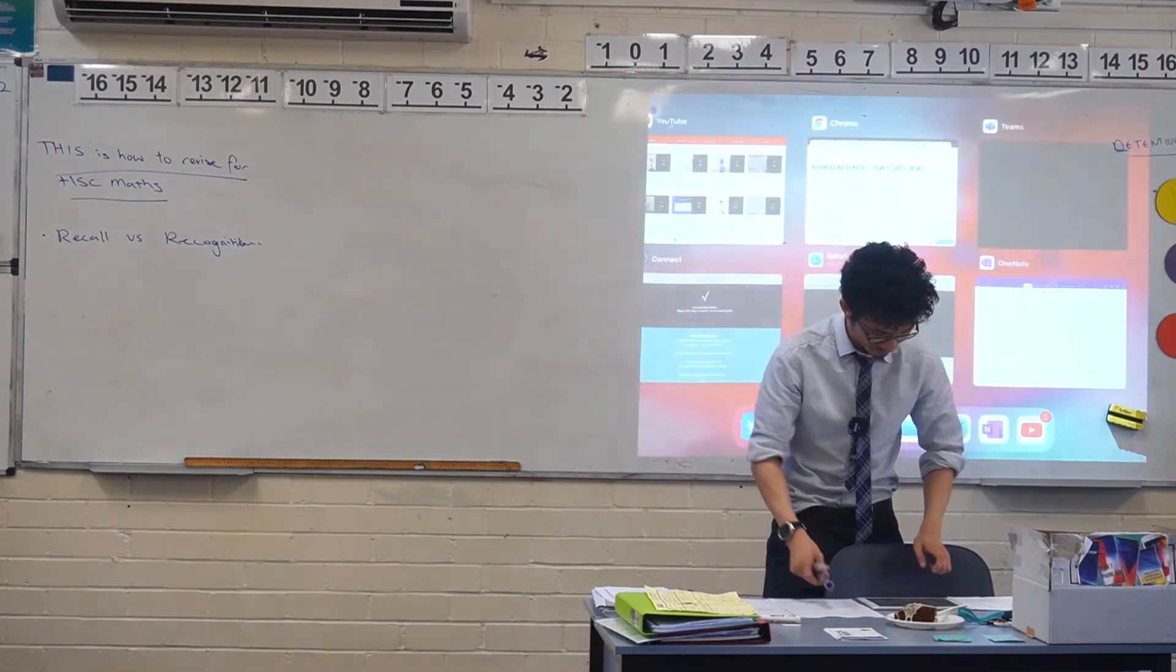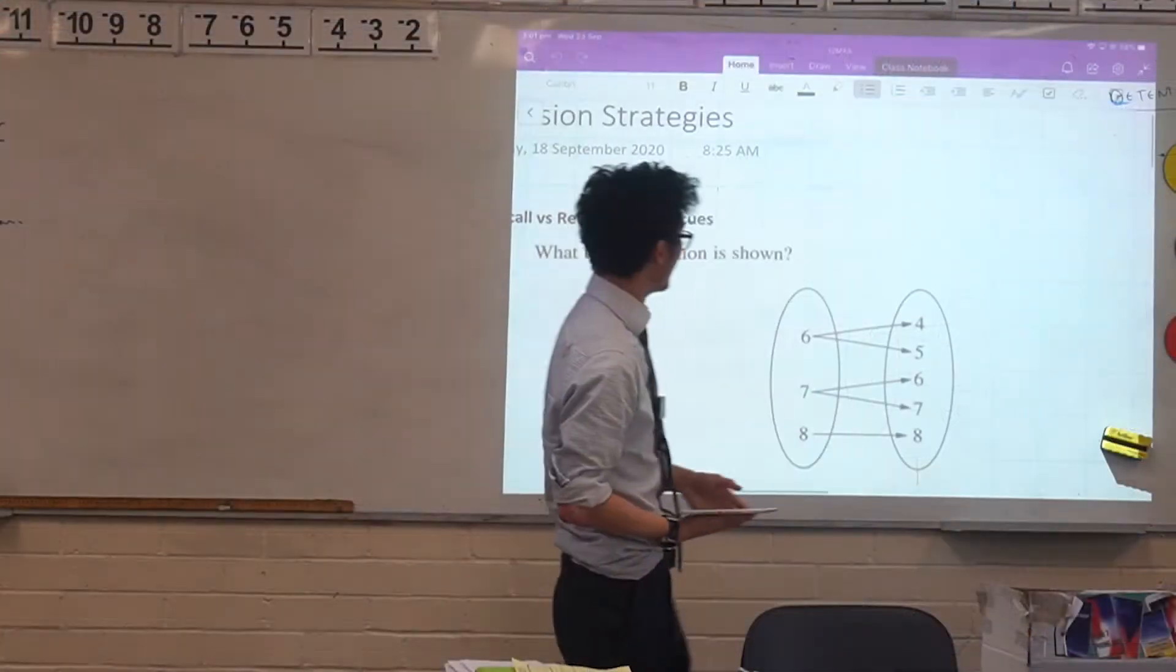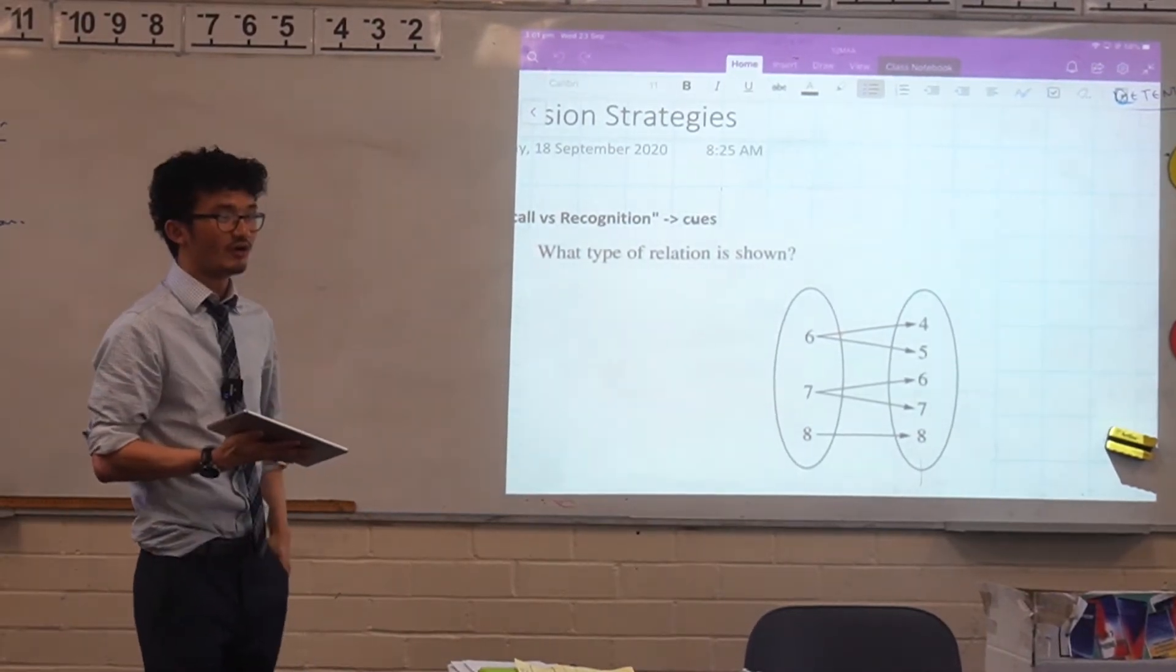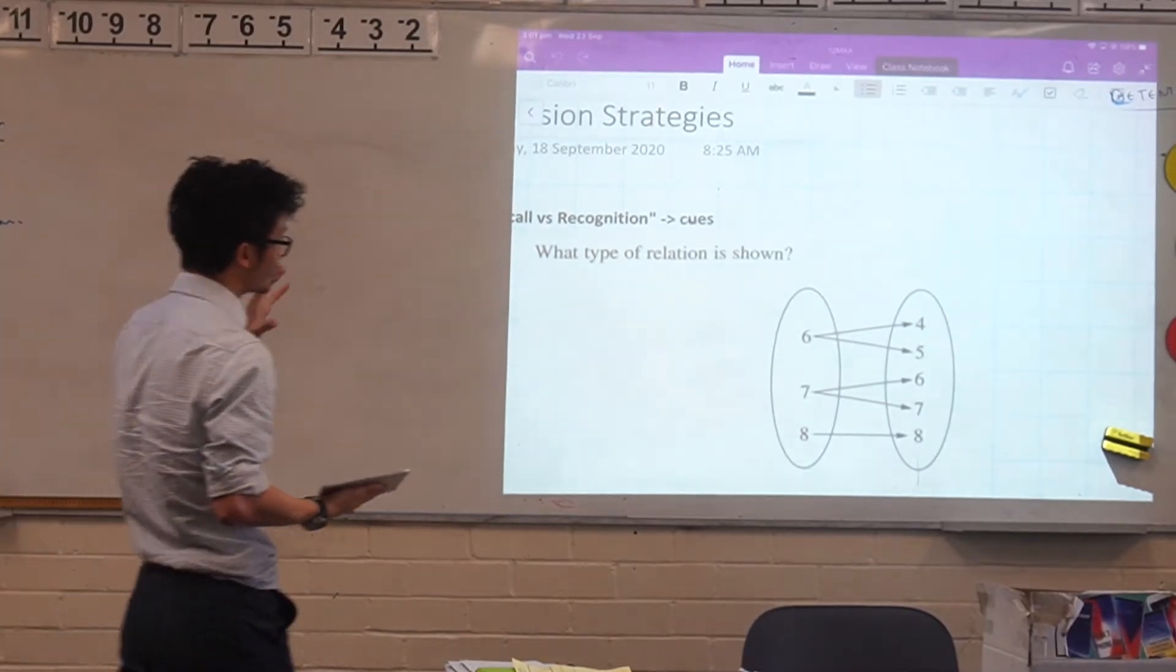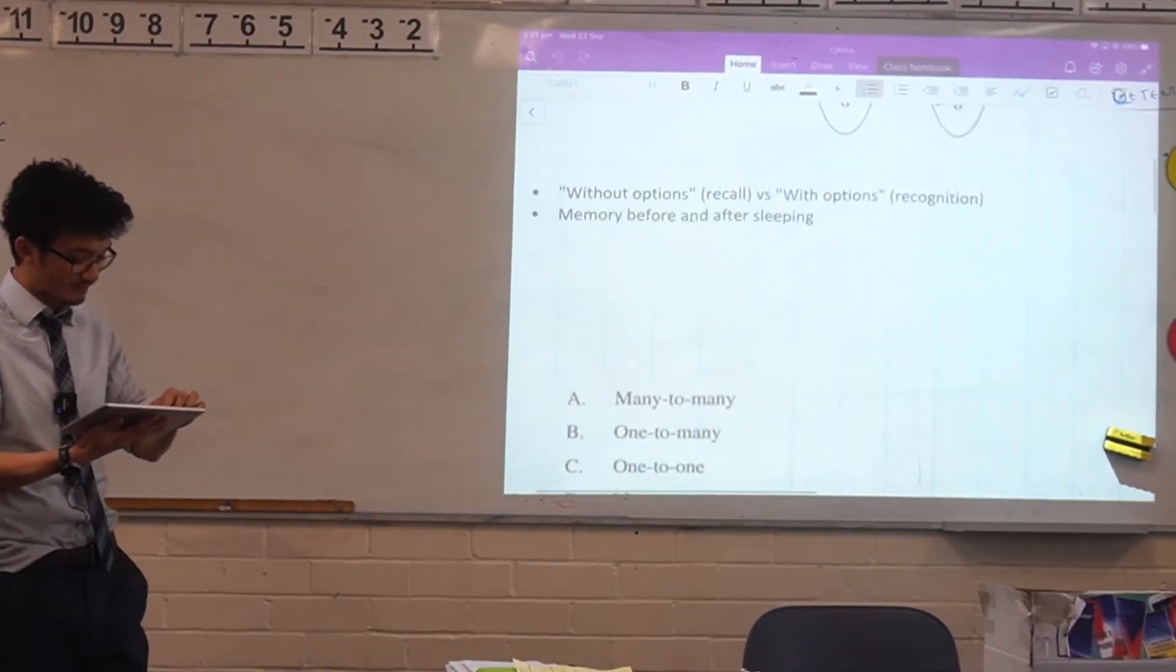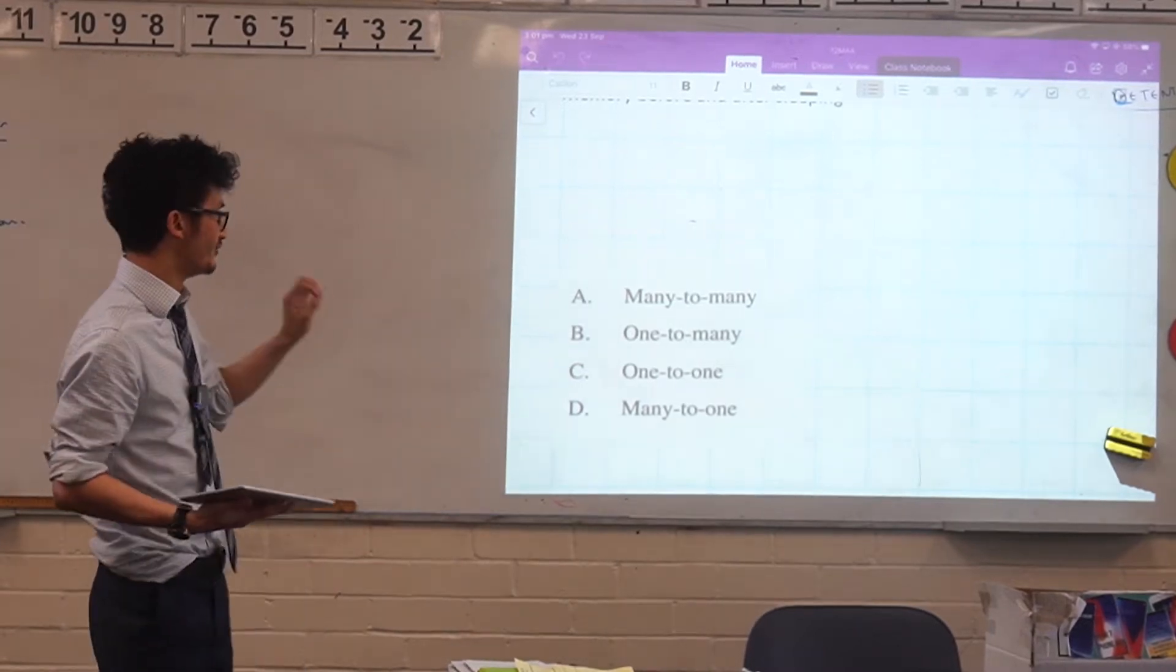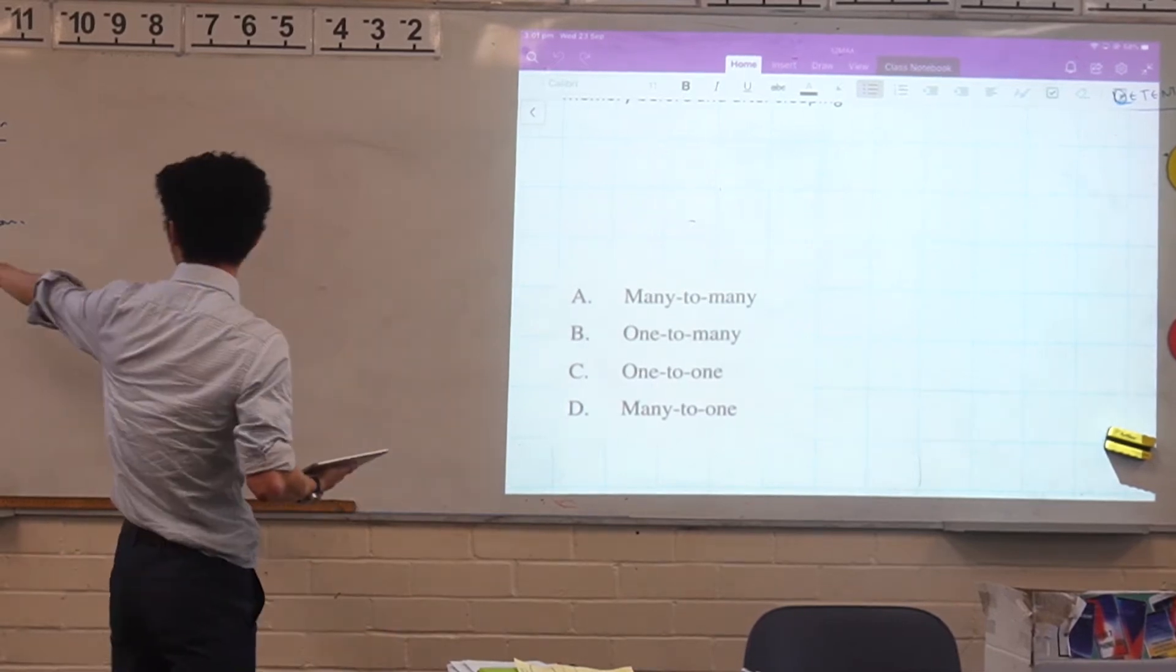So if we take for example this question here. The question says what type of relation is shown? This is something related to functions and relations and the answer for this one is one to many. Now if you were able to recall that information, you didn't need any prompts or anything like that, you could just straight up say that the answer is one to many. And if you had the options there like in a multiple choice question, that's when you have recognition. So if you're prompted with something and you get some of those terms given to you and you can answer that, that's when you have recognition there.